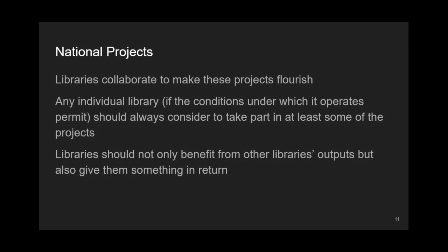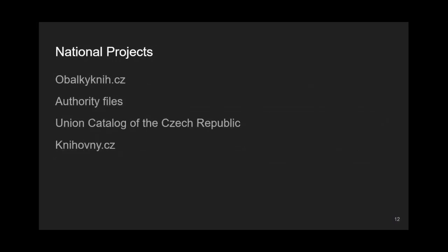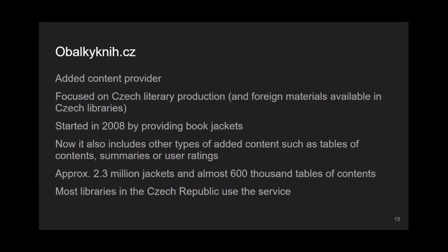There are a number of national projects in our country. We shall briefly touch upon four: Obalky knih.cz, Authority Files, the Union Catalog of the Czech Republic, and knihovny.cz. Obalky knih.cz is an edit content provider focused on materials available in Czech libraries. It started back in 2008 as a book jacket provider. Over the years, more types of edit content — such as tables of contents, summaries, and user ratings — have been included. Currently, it contains about 2.3 million book jackets and almost 600,000 tables of contents, and it is very popular with Czech libraries.